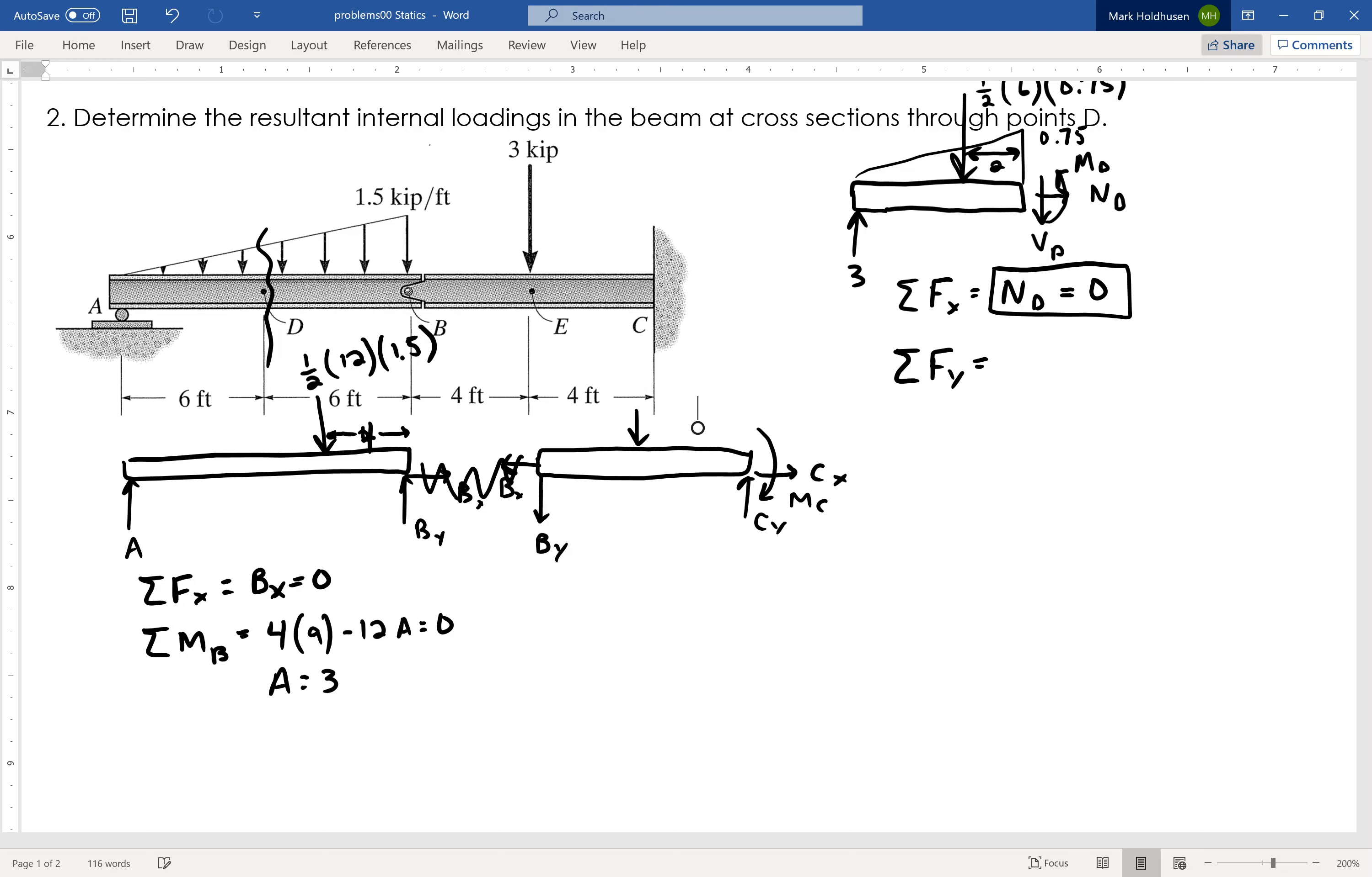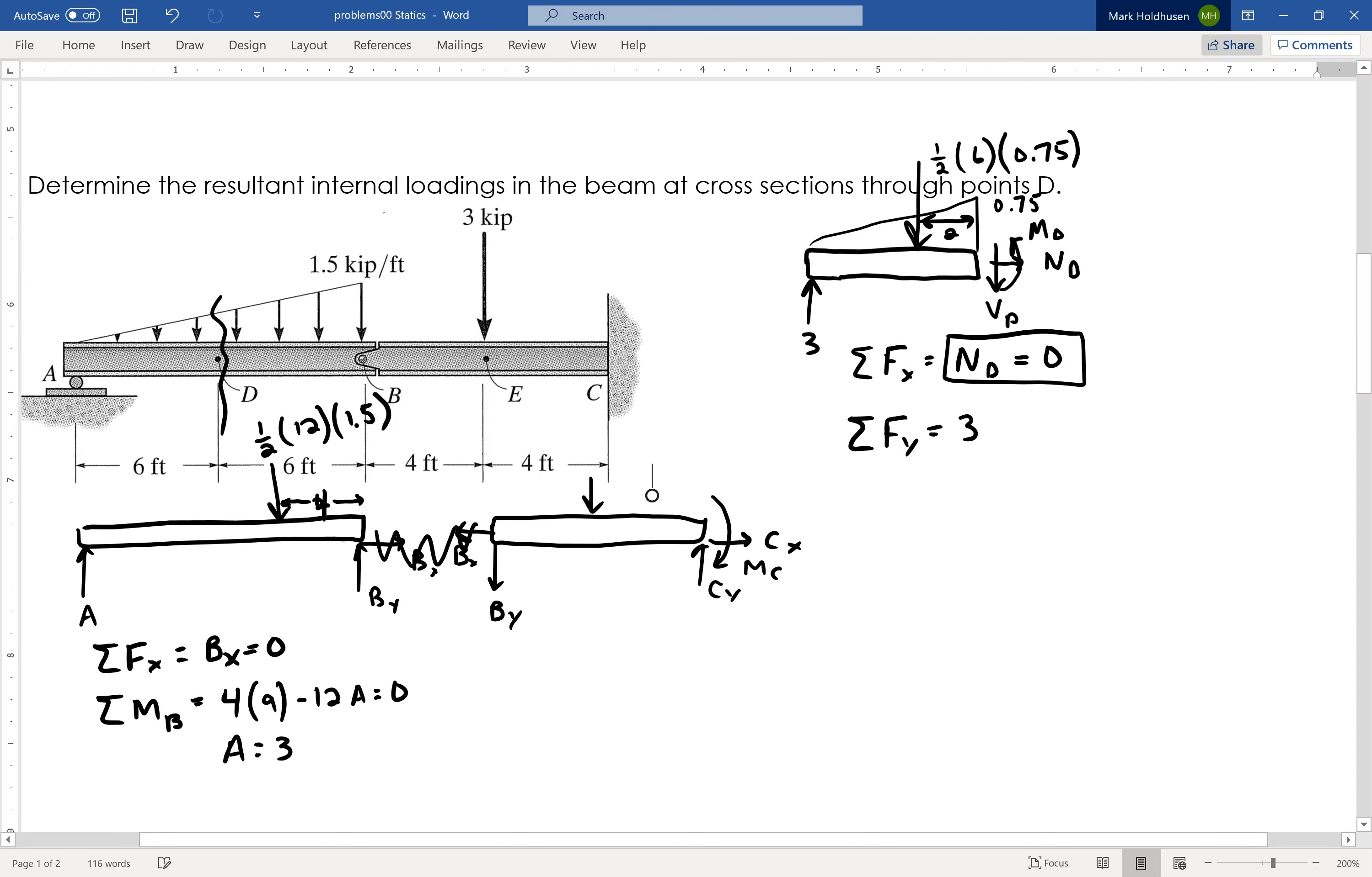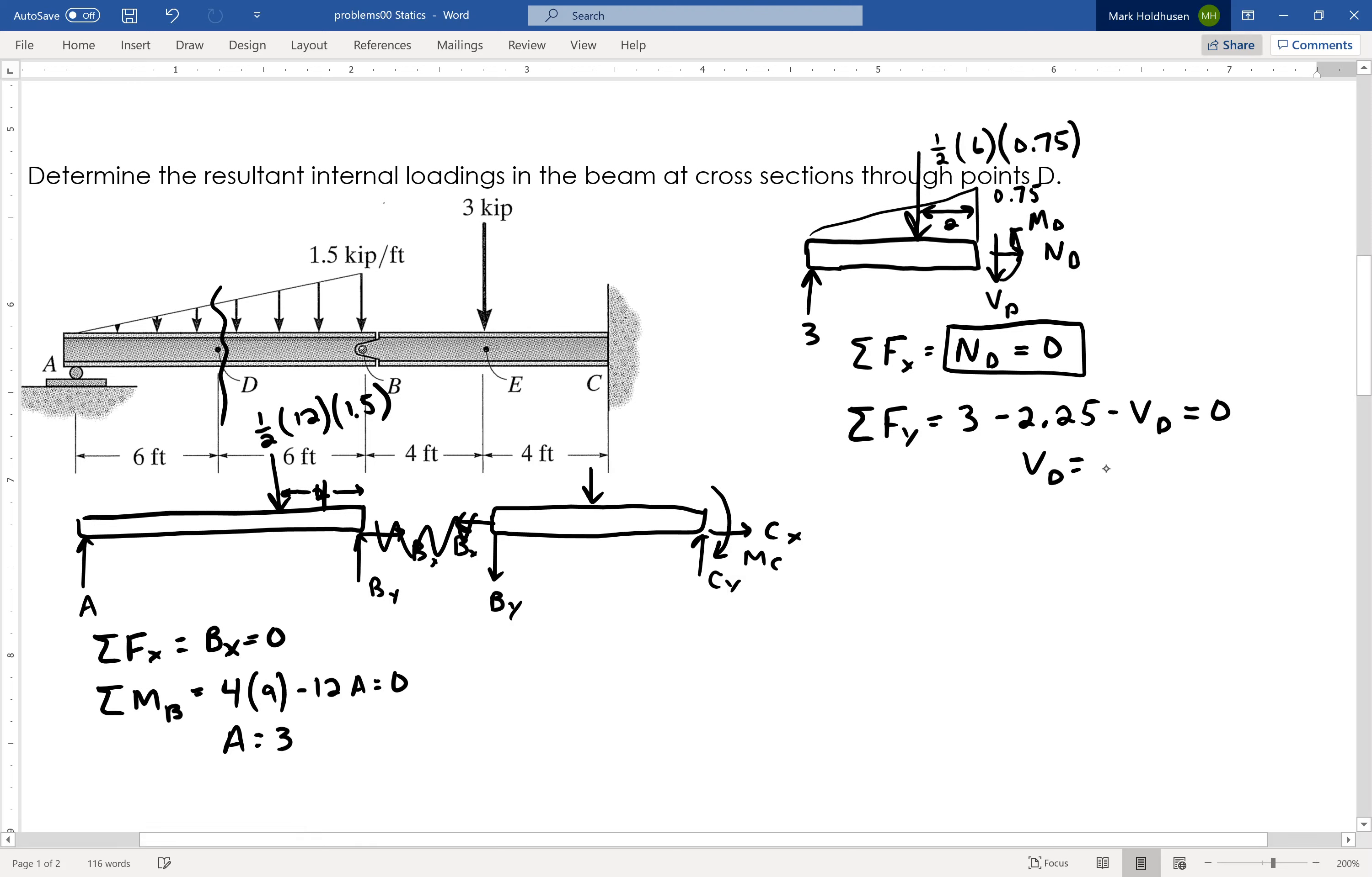Now I will sum the forces in the Y direction, so I have 3 going up. And minus 2.25, which is the 1.5 times 6 times 0.75. And then I have the shear at D acting downward. Therefore, that shear at D equals 0.75, and this is going to be in kips, because all my forces are in kips here. Kips, again, is 1,000 pounds, in case you've forgotten.